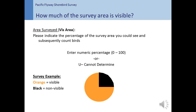Your map will outline your survey area and all shorebirds and raptors within that area should be counted and identified. However, there may be obstructions, tall vegetation, or access issues that limit your ability to see the entire survey area. For this reason, we ask you to record the visible area — the percent of the survey area as depicted on your map that you could see and subsequently survey. At larger coastal survey sites, it may be useful to shade areas on your map that you could not see. In this example, the orange indicates the amount of the survey area that is visible, and the black indicates the amount that is not visible. So for this survey area, 75% would be recorded as the visible area.